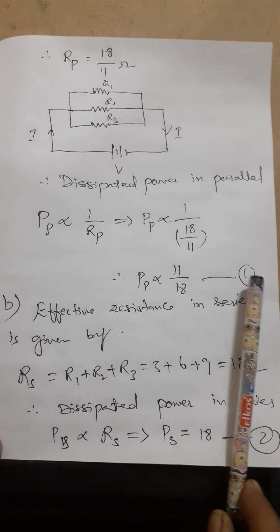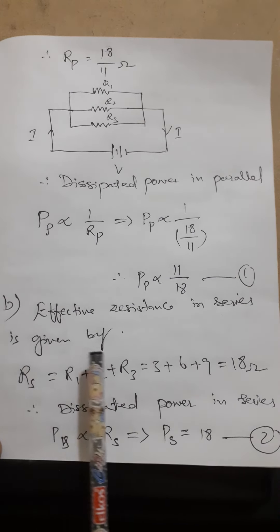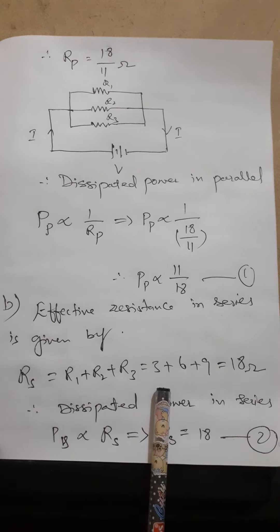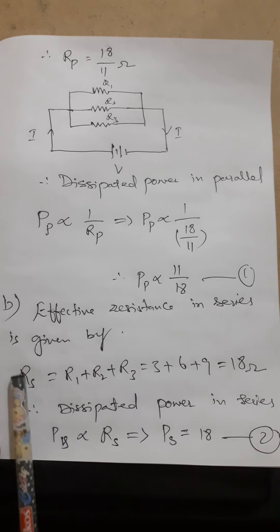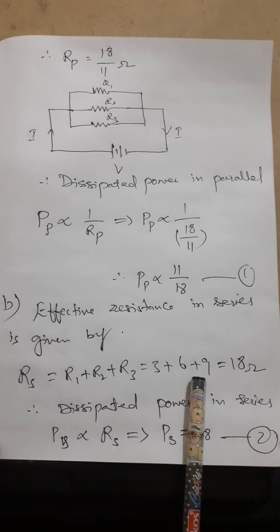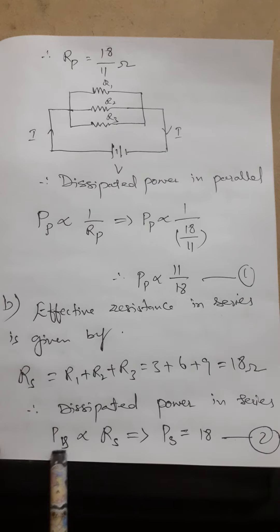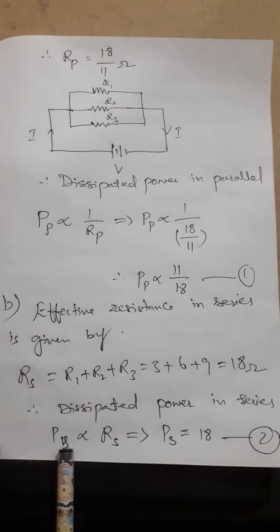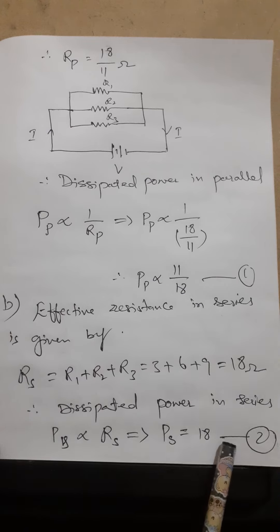Now, the effective resistance in series is given by Rs = R1 + R2 + R3. That is the formula for finding effective resistance in series: 3 + 6 + 9 = 18 ohms. The dissipated power in series is directly proportional to the effective resistance, so Ps is proportional to Rs.